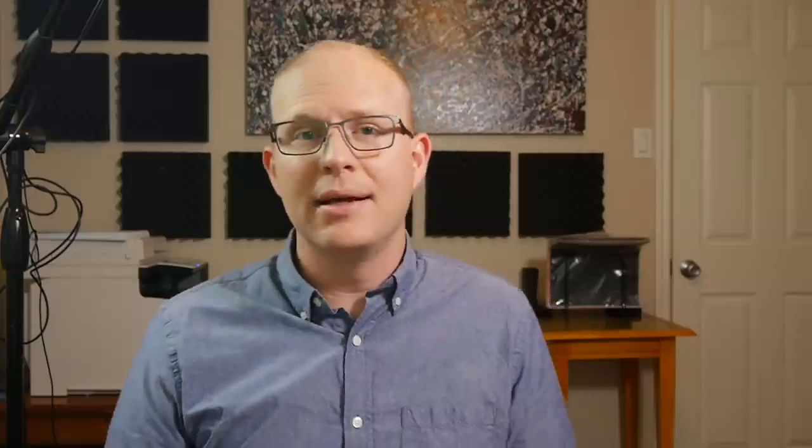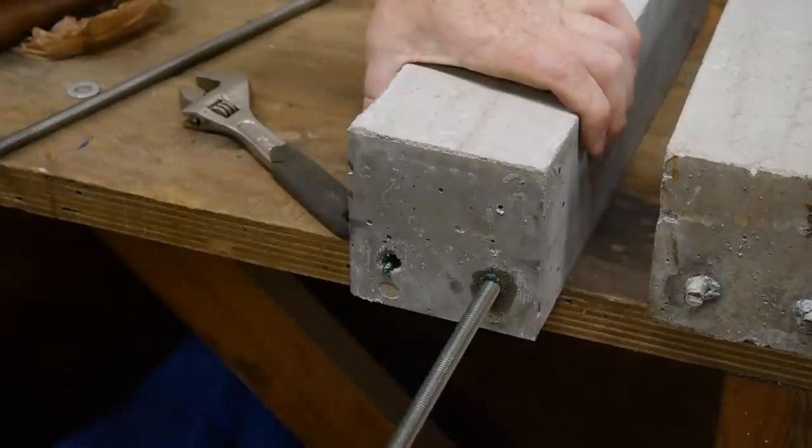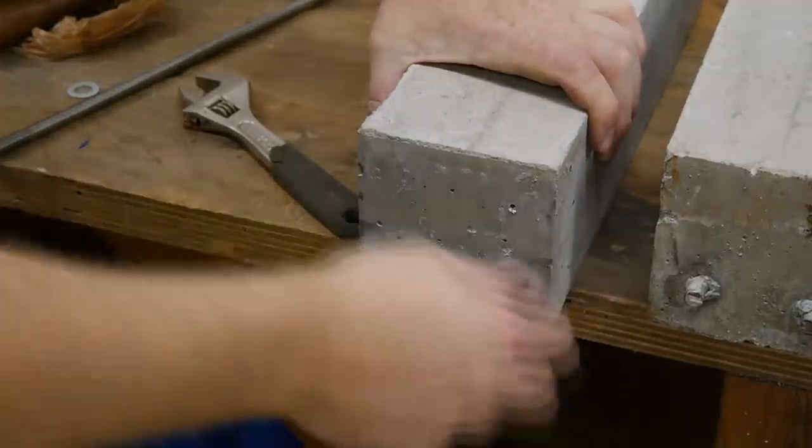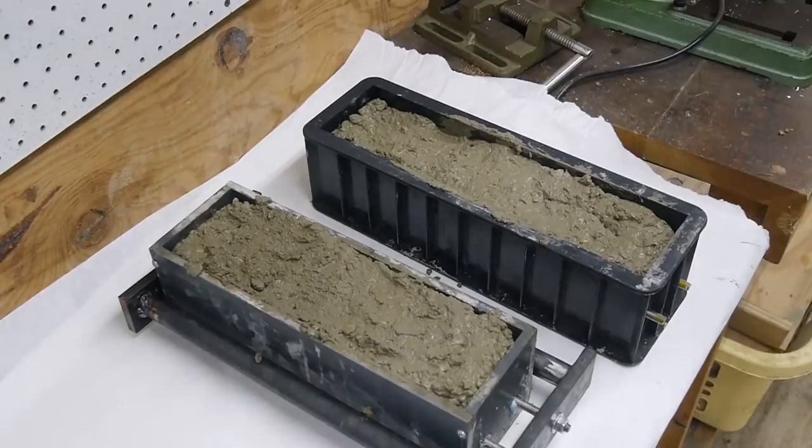The other method for pre-stressing steel is post-tensioning. In post-tensioning, the steel is stressed after the concrete cures, but still before the member is put into service. In this beam, I cast in smooth plastic sleeves in the mold. The steel rod can slide easily within these sleeves.